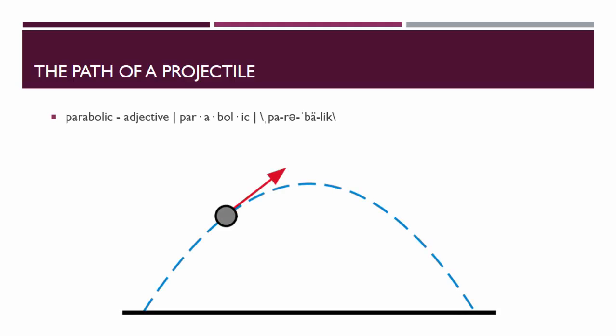The path of a projectile is described as being parabolic. This means like a parabola.